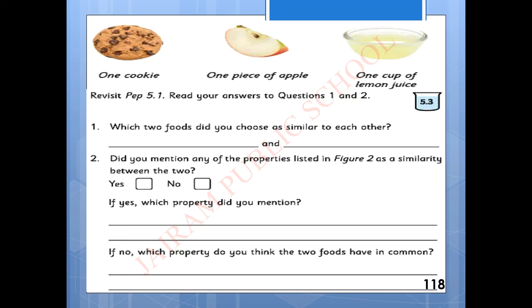Now, we can go for another activity. Let us have one cookie, one piece of apple, one cup of lemon juice which we already done this activity in the paper. Now let us discuss using these things the following questions. Which two foods did you choose as similar to each other? From the given food we have to choose two types of food which are in the similar state. For example, cookie and apple.